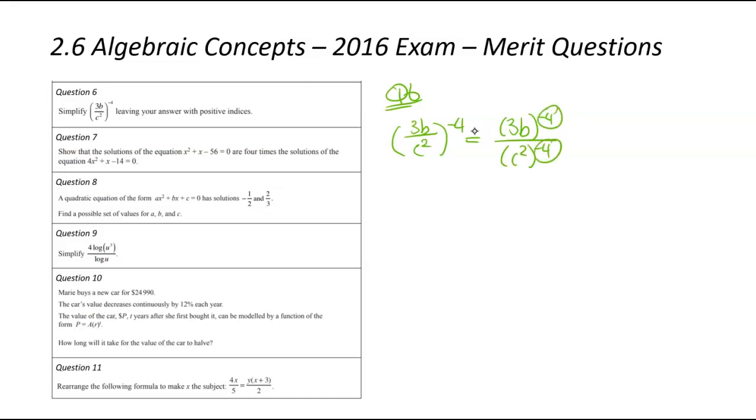Once we've done that, we're going to get rid of the negative part of this power. We're going to switch them around, make them positive. So the numerator is now going to be c squared to the power of four, and denominator 3b to the power of four.